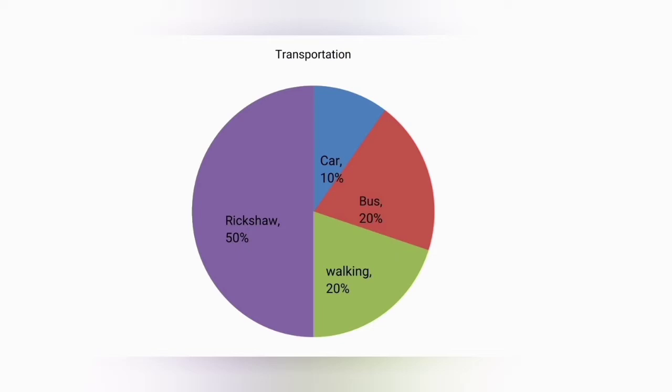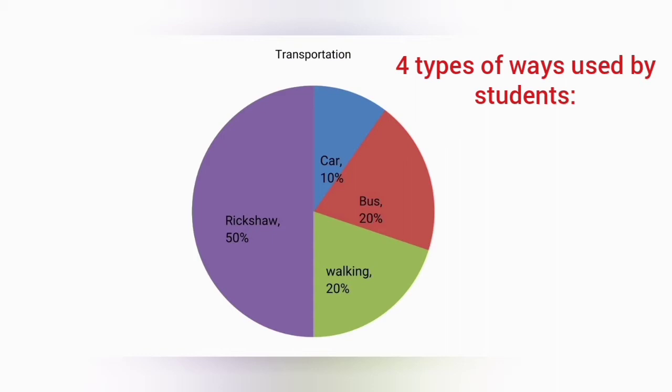The pie chart shows the percentages of types of transportation used by the students to come to school. There are four types of transportation shown in the pie chart. They are bus, car, rickshaw, and walking.